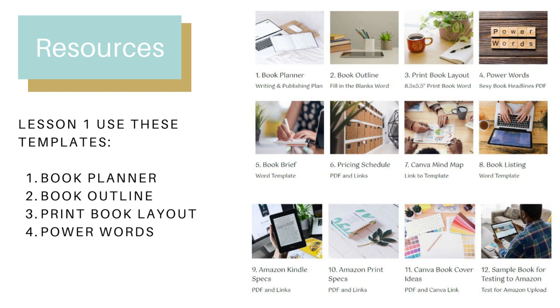The book listing template is what you use to create your Amazon listing. Amazon Kindle specifications are numbers 9 and 10 — there's Kindle and there's print. Then we have number 11, the Canva book cover.